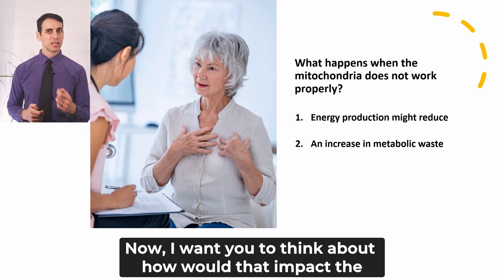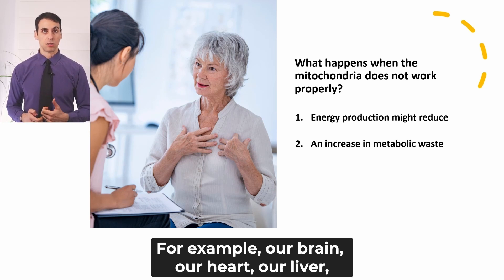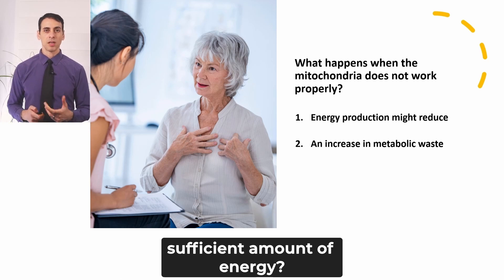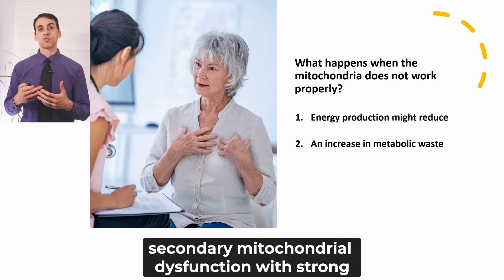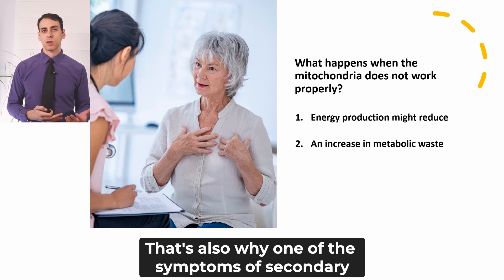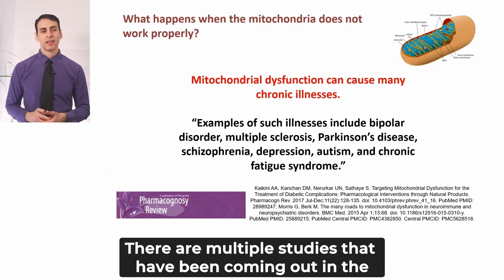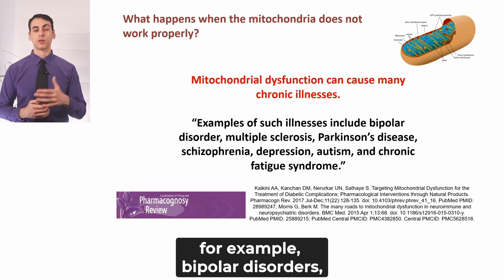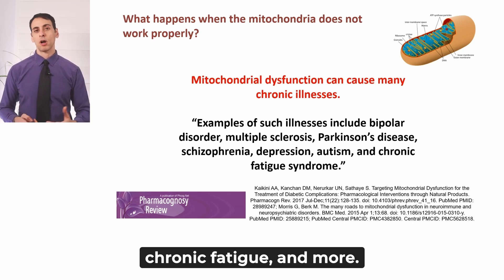Think about how that would impact the organs that need this energy the most — our brain, heart, liver, kidneys, and muscles. What happens if our mitochondria does not produce a sufficient amount of energy? This is why many studies refer to secondary mitochondrial dysfunction with strong associations to cognitive decline, Alzheimer's, and degenerative conditions. That's also why one of the symptoms of secondary mitochondrial dysfunction is fatigue. Multiple studies over the last few years discuss how mitochondrial dysfunction is associated with many chronic illnesses, including bipolar disorder, multiple sclerosis, Parkinson's disease, schizophrenia, depression, autism, and chronic fatigue.